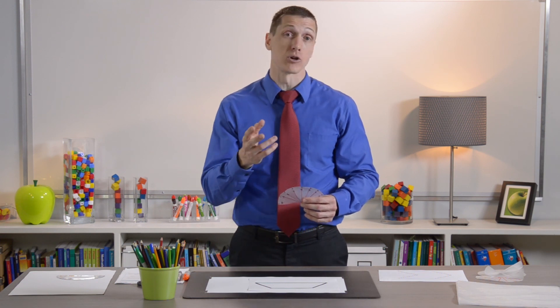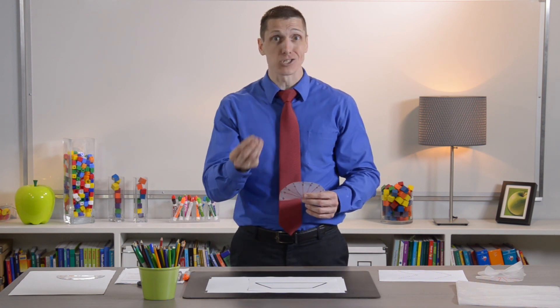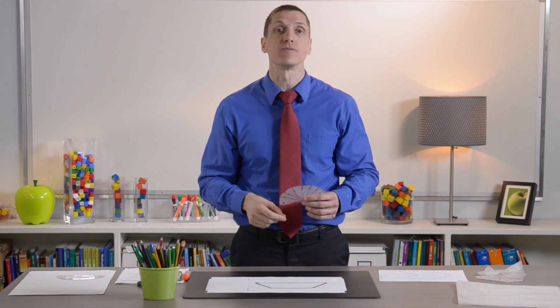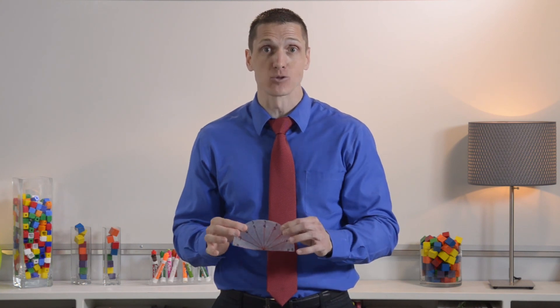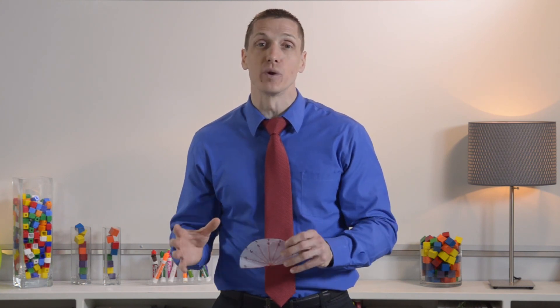All of this understanding is going to transfer to when students learn about what a degree is and that a degree is really just one 360th of a circle. In fact, a degree is just a very small wedge. So once you've built this understanding, students will be ready to transfer that conceptual knowledge into using a real 180 degree protractor. I hope that this video helps as you continue to work with your students on measuring and drawing angles and understanding what a protractor is.